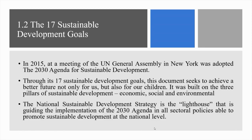Subchapter 1.2: The 17 Sustainable Development Goals. In 2015, at a meeting of the UN General Assembly in New York, a 2030 Agenda for Sustainable Development was adopted. Through its 17 Sustainable Development Goals, this document seeks to achieve a better future not only for us but also for our children. It was built on the three pillars of sustainable development: economic, social and environmental. The National Sustainable Development Strategy is the lighthouse guiding implementation of the 2030 Agenda in all sectoral policies able to promote sustainable development at the national level.